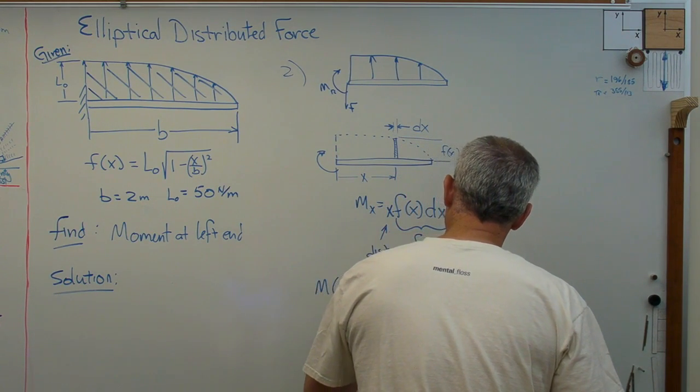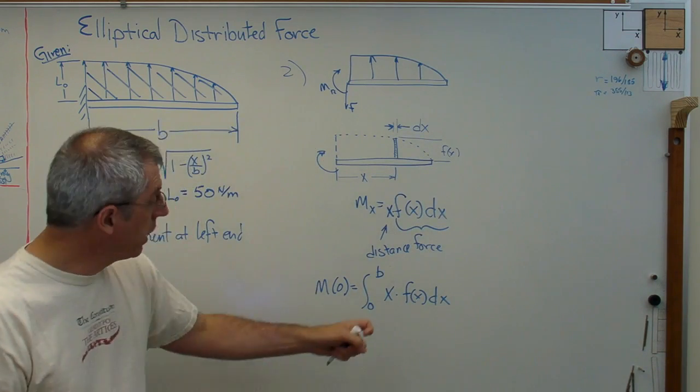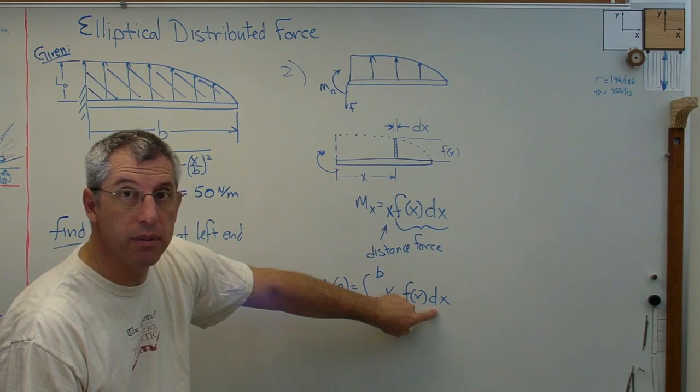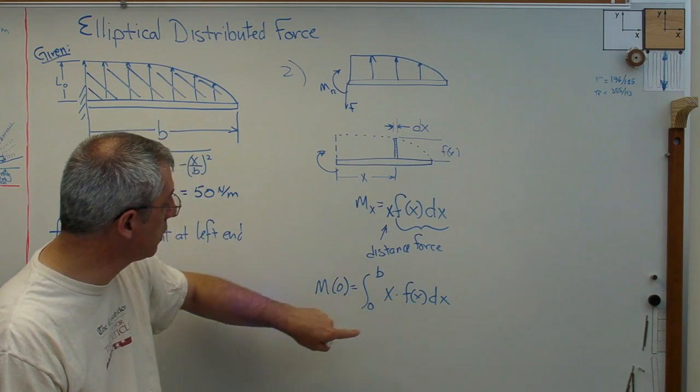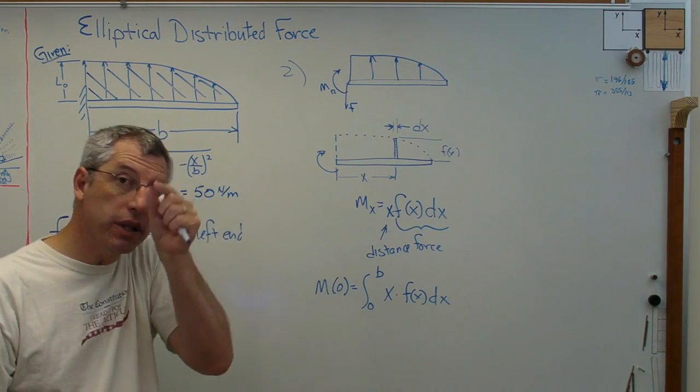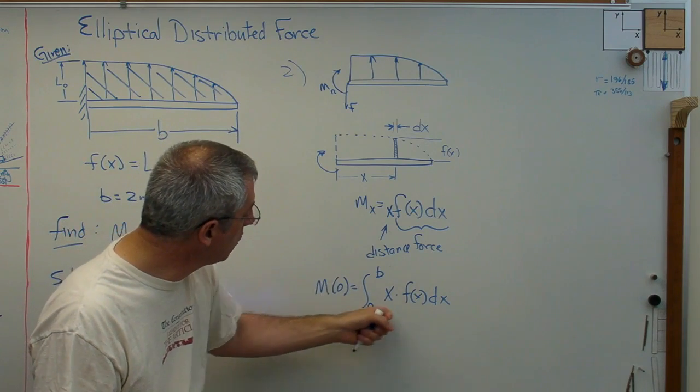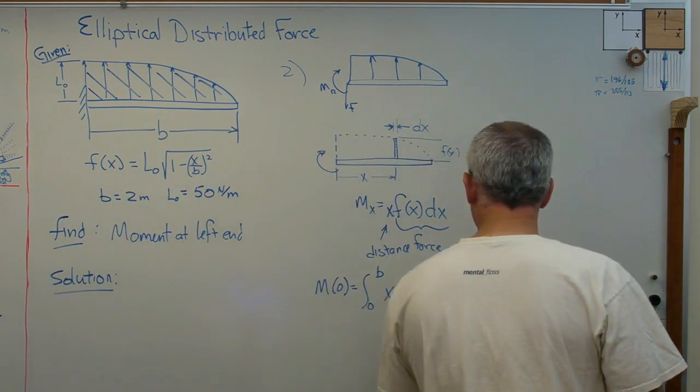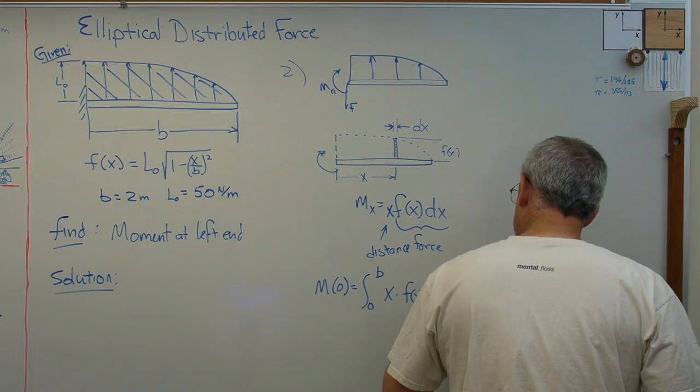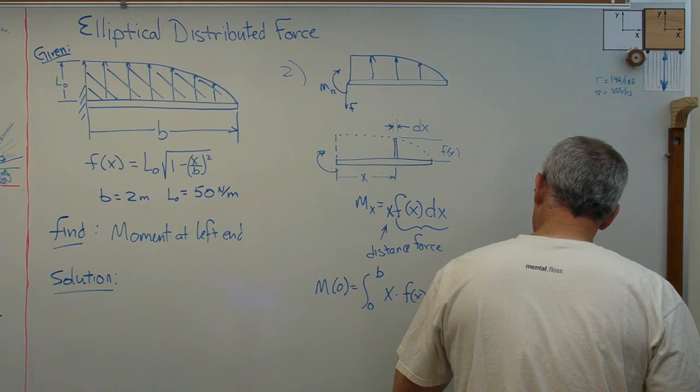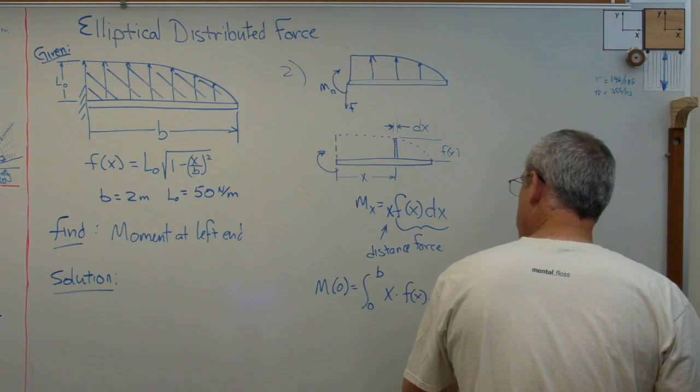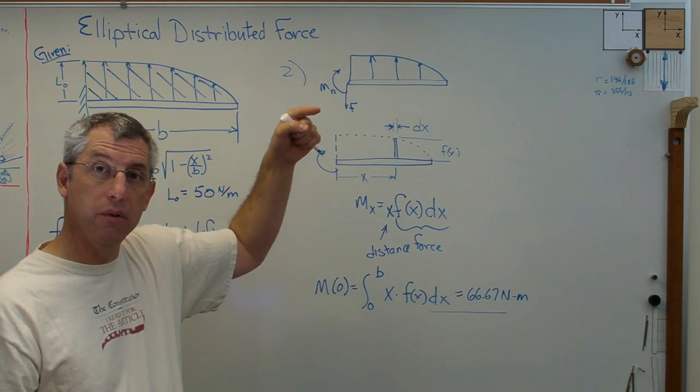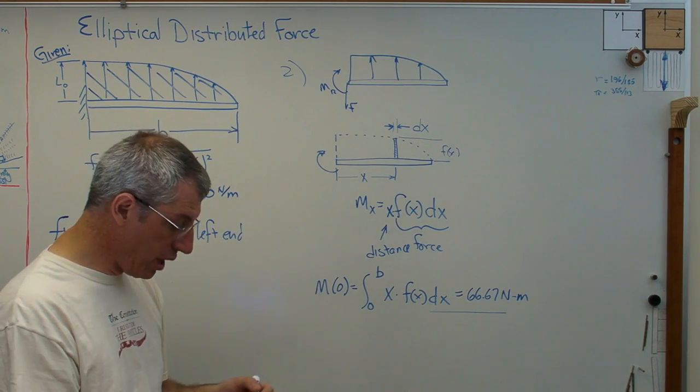What I can do is say distance times force, f of x times dx is a force times a distance, add all those little dx's up across the wing from 0 to b and I'm going to get a moment. I'm going to get a number now. And that also turns out to be 66.67 newton meters. So, that's more direct than the other way where I integrated force to get shear and then integrated shear to get moment.